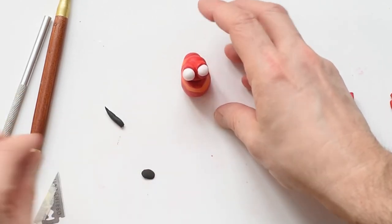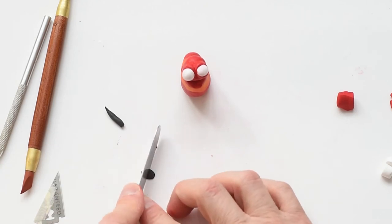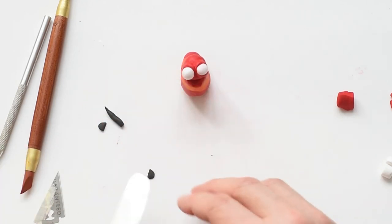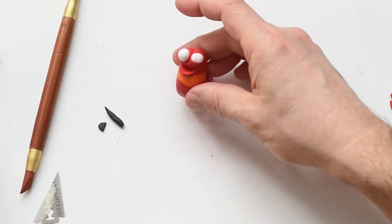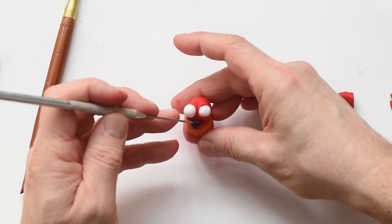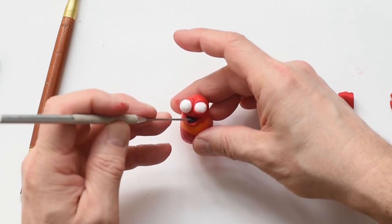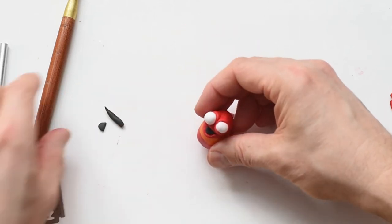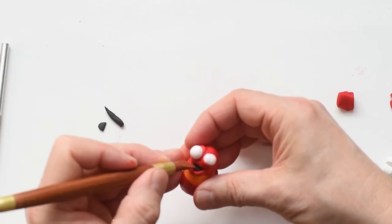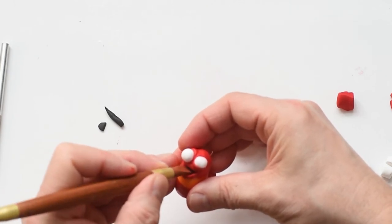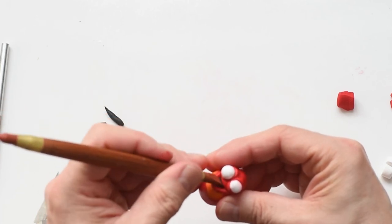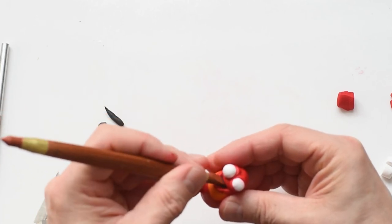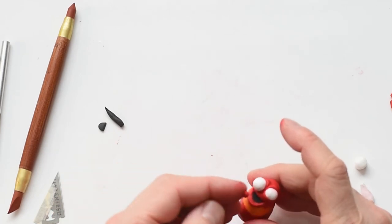I make a little piece of black to fit into the mouth. I use my tools to put it in and try to put it in the right place so it looks like the black inside of a mouth.